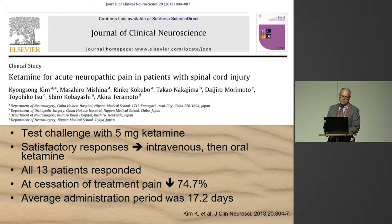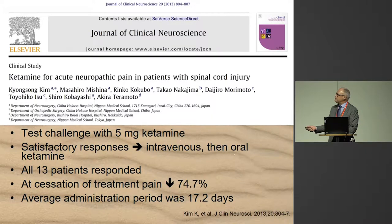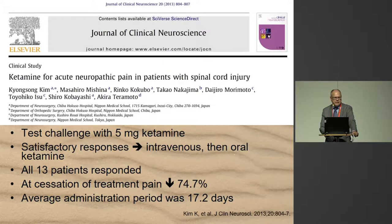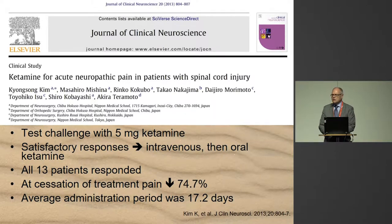A supportive study from the same group later looked at spinal cord injury with the same result: ketamine beats lidocaine in both number of responders and pain reduction in acute neuropathic pain. This was also confirmed in 2013 by a Japanese group — they gave a test challenge of 5 mg ketamine, and if a satisfactory response was obtained, proceeded to intravenous and then oral ketamine. All 13 patients with acute neuropathic pain after spinal cord injury responded.